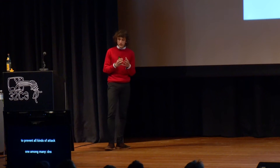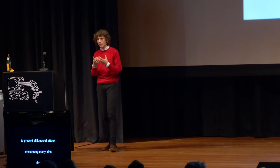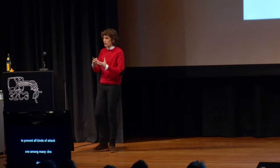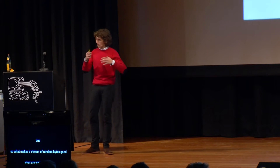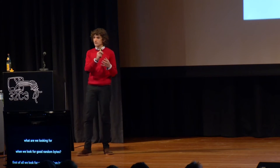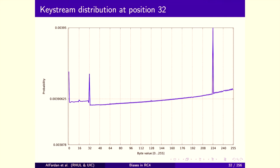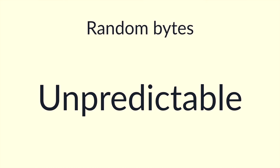So what makes a source of random bytes good? What are we looking for? First, we look for uniform random bytes — every time we draw a random byte from our source, we want the same probability of getting all values from 0 to 255. You don't want your distribution to look like RC4's. But that's not enough — you also want your random bytes to be completely unpredictable.